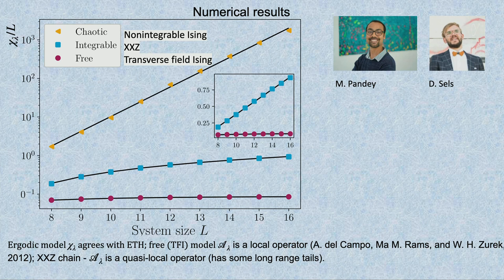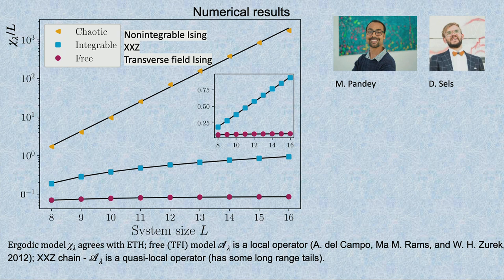This lambda is a perturbation which doesn't break integrability—I deform the Hamiltonian keeping it integrable, which is very important. If I take an integrable model and keep it integrable, orbits remain simple. If I take an integrable model and make it non-integrable, I immediately start destroying orbits and fidelity susceptibility worsens. But I'll come to that later.